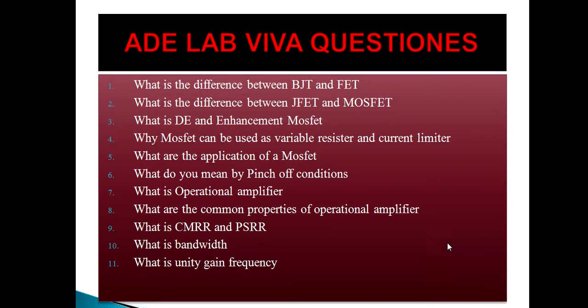MOSFET can be used as a current limiter because the drain current ID will increase as you increase VDS, initially in the linear region. Once it reaches the pinch-off voltage, the drain current will get saturated, so current will not increase beyond this point. That's why it can be used as a current limiter application.